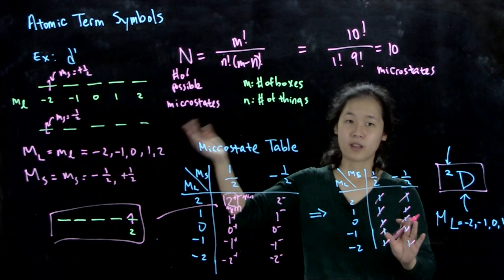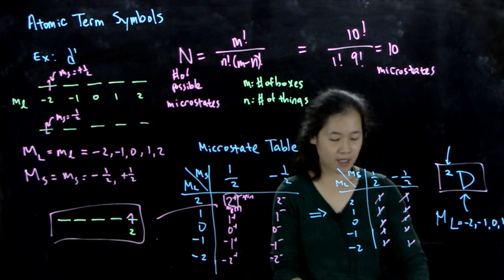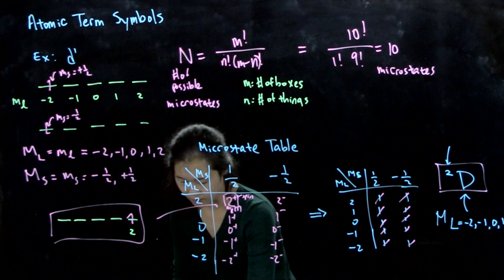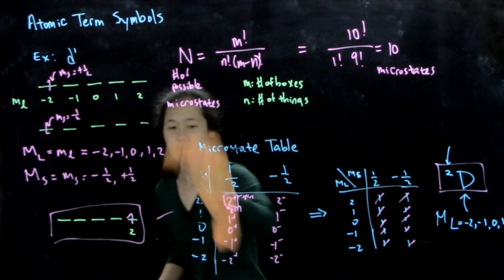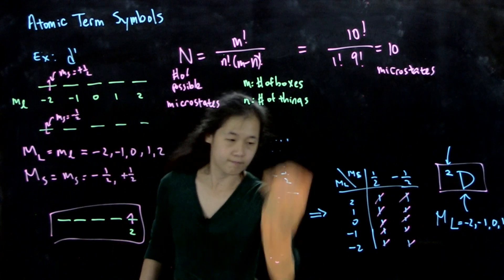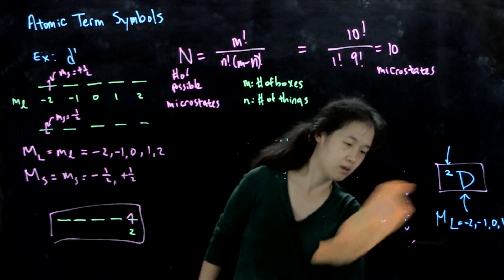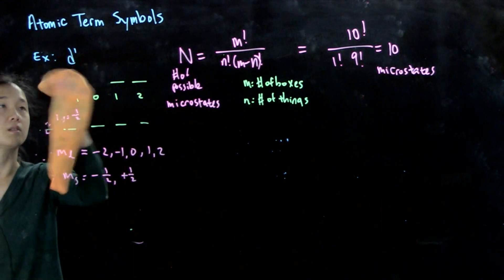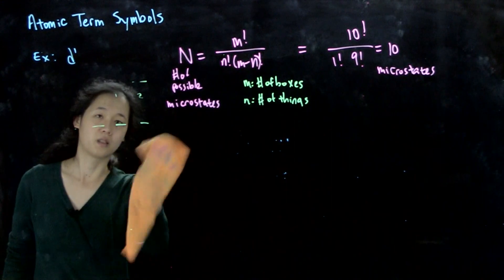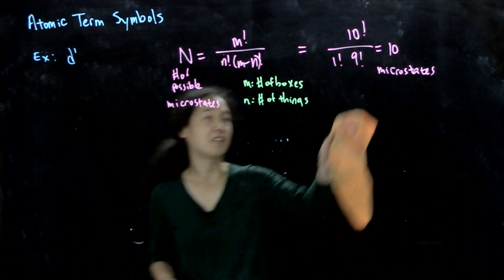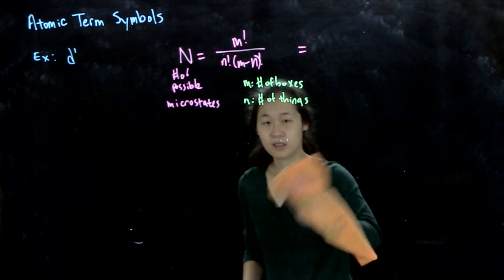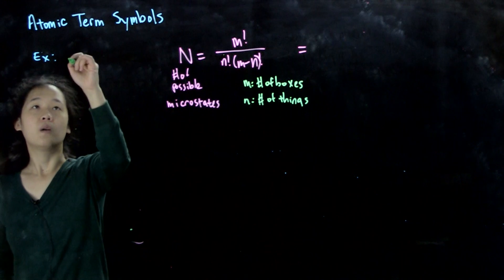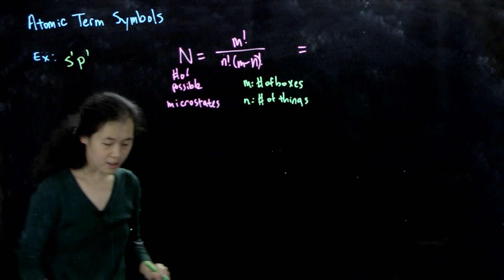Let me give another example with multiple electrons, where things are not so easy. Suppose we have two electrons: one in an s orbital and one in a p orbital — an s¹p¹ configuration, or 2s¹2p¹.